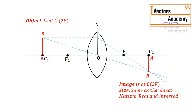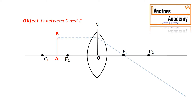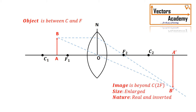If you bring the object even closer to the lens, the image moves even further away from the lens. When an object is placed between the focal length and the center of curvature, the image formed is beyond the center of curvature. The image is inverted, enlarged, and real.